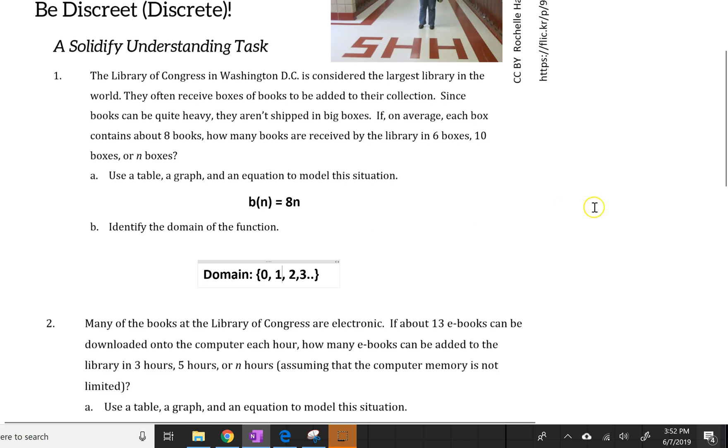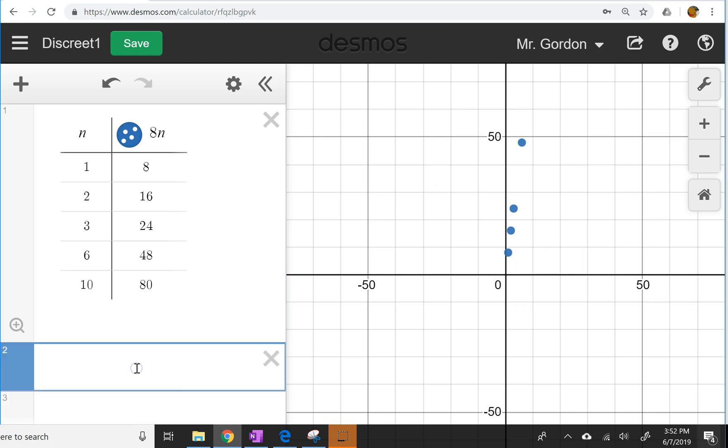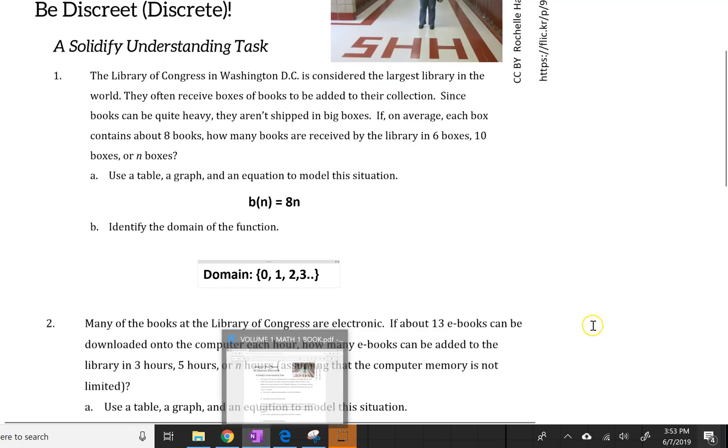So this is a discrete function. It's a discrete linear function. As we can see, if I was to connect these points, it would form a straight line. And I could even kind of show you that here. All right, so let's look at scenario number two.